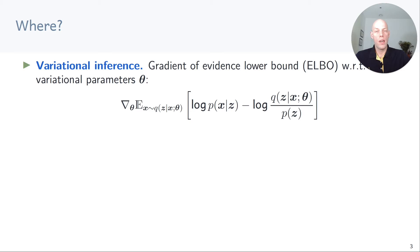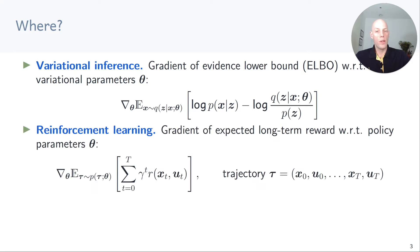Gradients of expected utilities appear in many places in machine learning. For example, in variational inference, we compute the gradient of the evidence lower bound with respect to variational parameters. The evidence lower bound itself is an expectation of a log likelihood minus a log ratio, and the expectation is taken with respect to the variational distribution q. In reinforcement learning, we compute the gradient of an expected long-term reward with respect to policy parameters theta, where the expectation is taken with respect to the distribution over trajectories of states x and actions u.